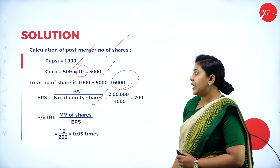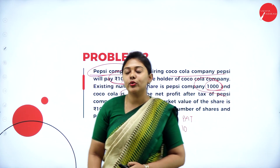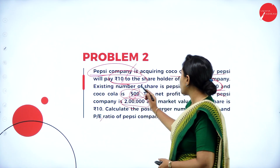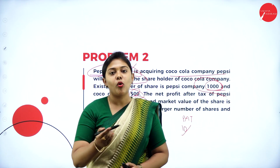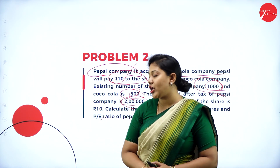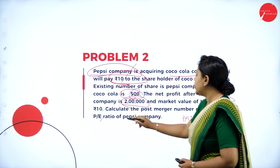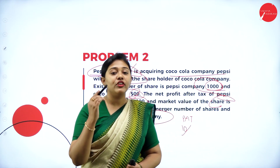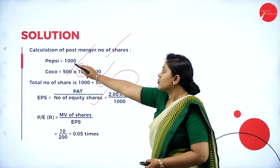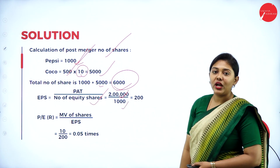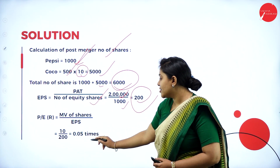Now let us calculate EPS, because we need to calculate PE ratio. Market value per share is 10 rupees, but EPS is not known. To calculate EPS: profit after tax divided by total number of shares. Profit after tax is 2 lakh. We are calculating Pepsi company's PE ratio, so we consider only Pepsi's 1,000 shares. EPS = 2,00,000 divided by 1,000 = 200. Substituting into the PE ratio formula, the answer is 0.05 times.